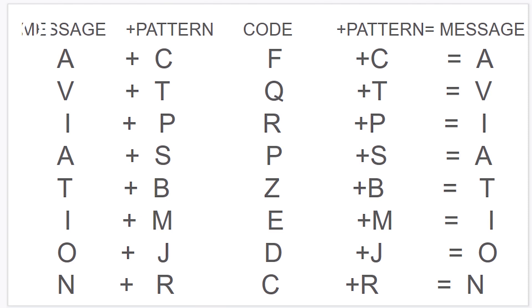If you send a code to the receiving station, you can send a message to the receiving station. There are many people who are at the receiving station. In Britain, they are in a decoding factory — a cryptology factory.